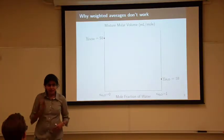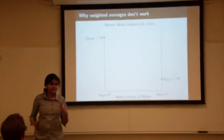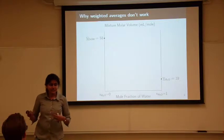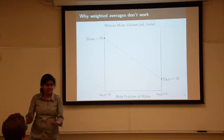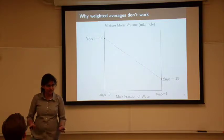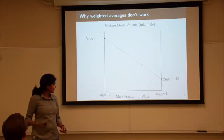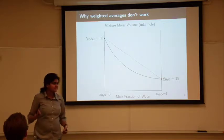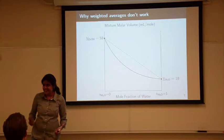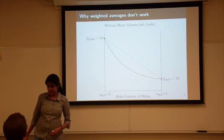What happens in between? If you assume a weighted average relationship between mixture volume and composition, you get a straight line - a linear dependence on composition. But what actually happens when you mix ethanol and water, as any bartender will tell you, is that it shrinks. If you're a bartender and don't know this, you're going to get into trouble.